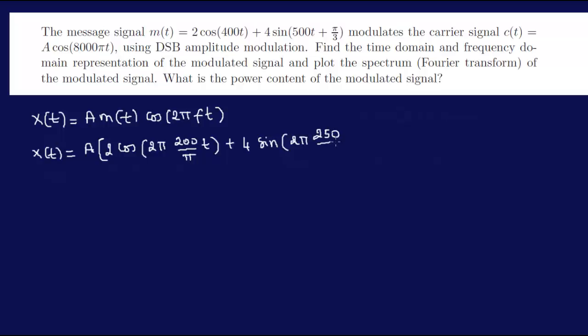Moving forward, you do the same thing for your 500T. You multiply by 2π and divide by π, and plus π/3 of course.